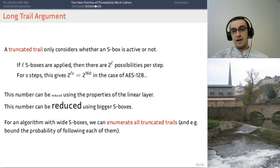What this means is that if you have an algorithm which uses wide s-boxes, like T-RAX, then you can enumerate all truncated trails. You can just loop over all of them. It's practical. It's practical and it's actually quite fast. You don't need a cluster to do that.